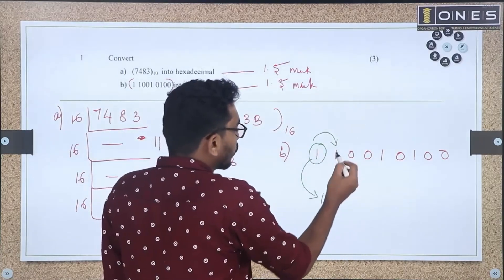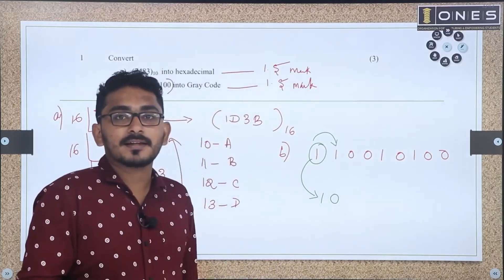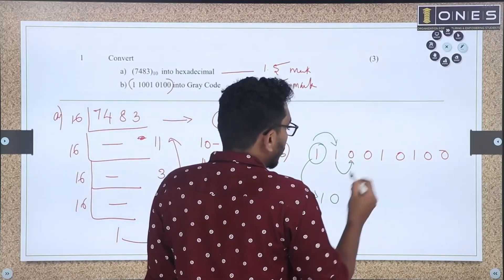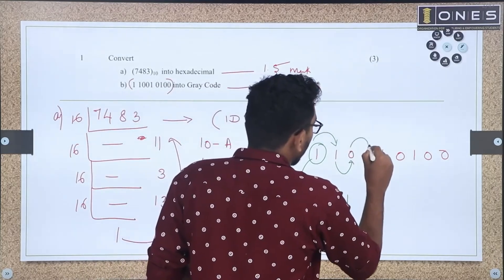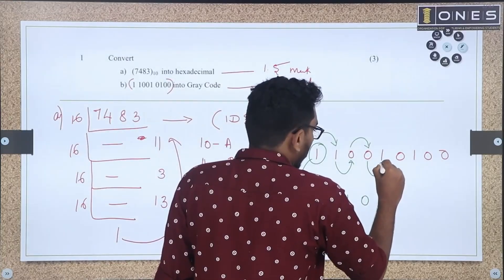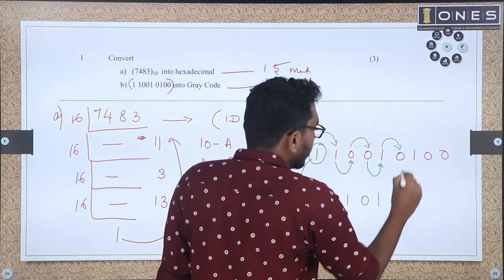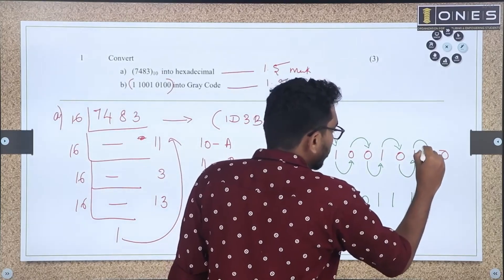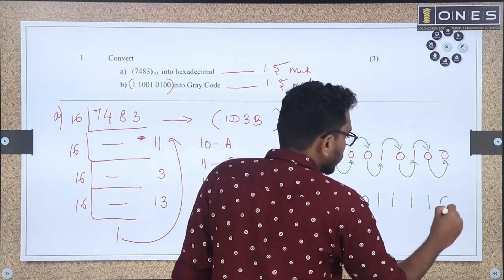Working through the conversion: 1 plus 1 = 0 (carry omitted); 1 plus 0 = 1; 1 plus 0 = 1; 0 plus 0 = 0; 0 plus 0 = 0; 0 plus 1 = 1; 1 plus 0 = 1; 0 plus 1 = 1; 1 plus 0 = 1; and 0 plus 0 = 0.